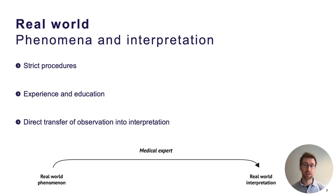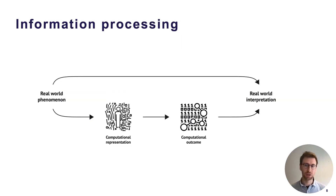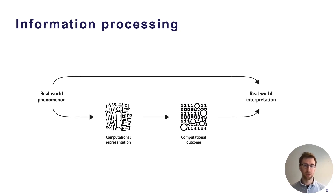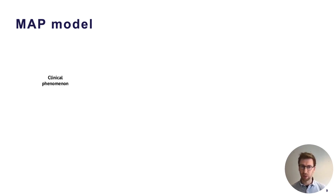For an AI system on the other hand, this interpretation of the environment is anything but second nature. These systems have to be taught what to look for and what judgment to assign to their observations. A digital tool has to first create a computational representation of a real-world phenomenon, then convert this into a computational outcome, which can then eventually be presented to the end user. Informed by prior work and the broad literature on information processing, such as the IPOW model, we present in this paper the MAP model.